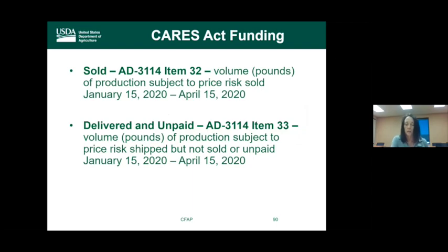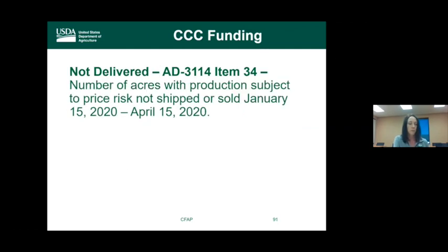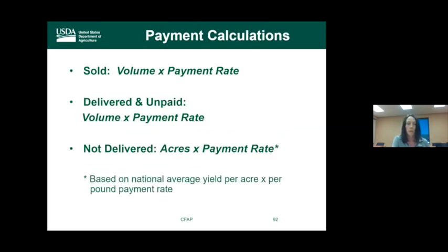Specialty crops are completed in Part G of the application and have three categories: item 32 — volume of production subject to price risk sold between January 15th and April 15th; item 33 — volume of production subject to price risk shipped but not sold or unpaid between January 15th and April 15th; and item 34 — number of acres with production subject to price risk not shipped or sold during that period. Payment rates are applied to each category, with the not-delivered acre rate based on national average yield per acre times the per-pound payment rate.